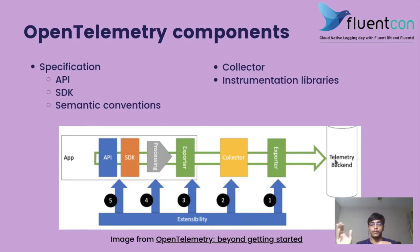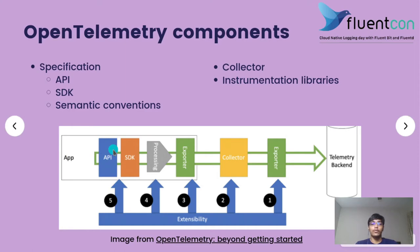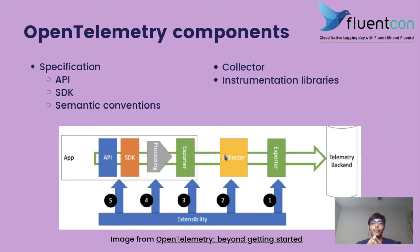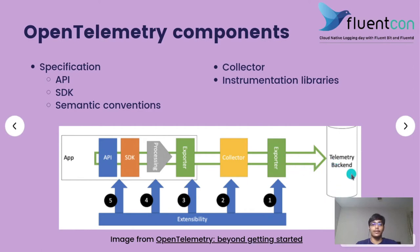The OpenTelemetry collector is a component that receives telemetry data, processes it, and exports it to the backend of your choice. The data flow usually looks something like this: we have an application in which we use the OpenTelemetry API to instrument our application, which is implemented by the SDK. The instrumentation that is generated is exported using the exporters. The exported telemetry is sent to the OpenTelemetry collector, where we collect data from various applications in a single place. The collector enriches this data, passes it through various processors, and then sends it to the exporter to send to various backends.